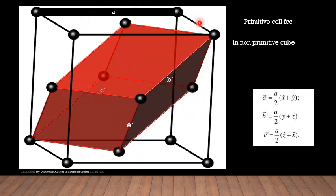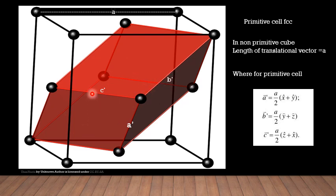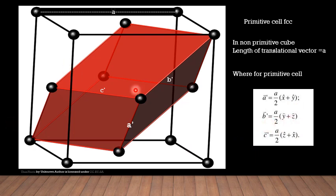This is the primitive cell inside the face-centered cubic unit cell. This primitive cell is a rhombohedral primitive cell, and primitive translational vectors for this cell are a', b', and c'. If this is atom a and this is the origin, with x-axis, y-axis, and z-axis defined, then this atom is lying in the xy-plane. So the coordinate of this atom will be a/2 (x + y), because it is exactly at the middle of the length a of the non-primitive cell.